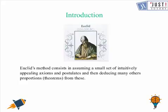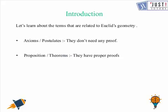Before moving further, let us understand a few key terms. Axioms and postulates are self-evident statements that are believed to be true without any written proof. On the other hand, propositions and theorems are statements that have a proper written proof using reasoning and some axioms and postulates.